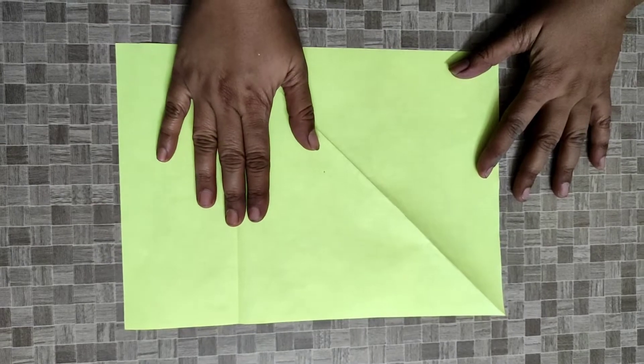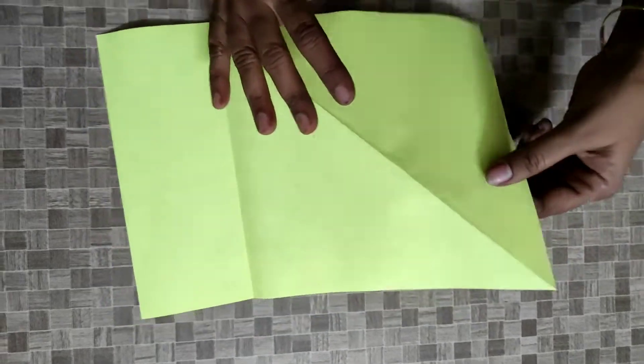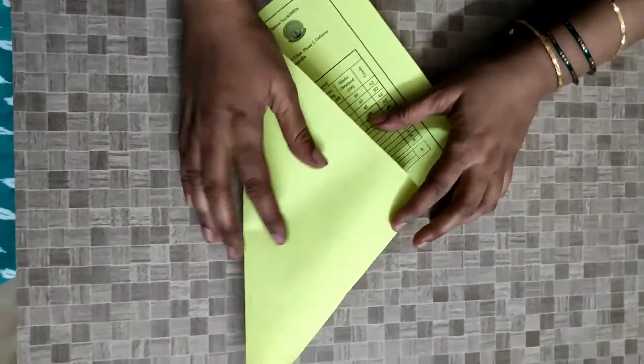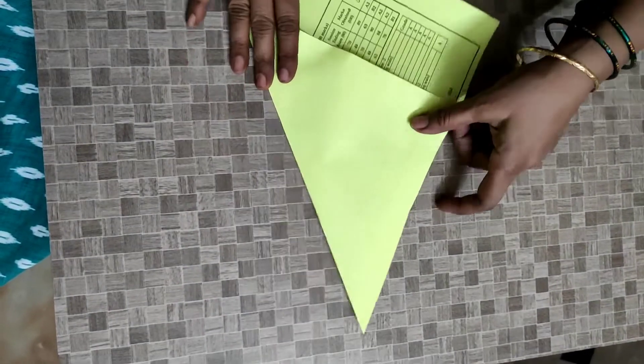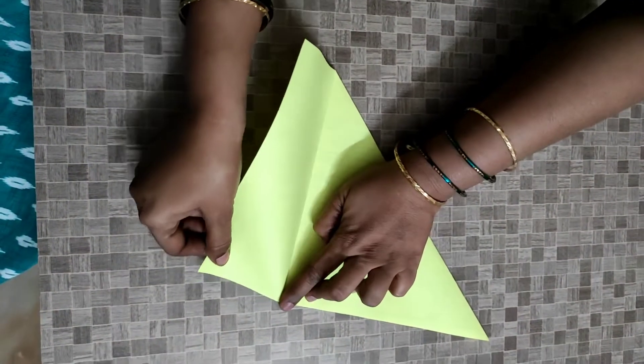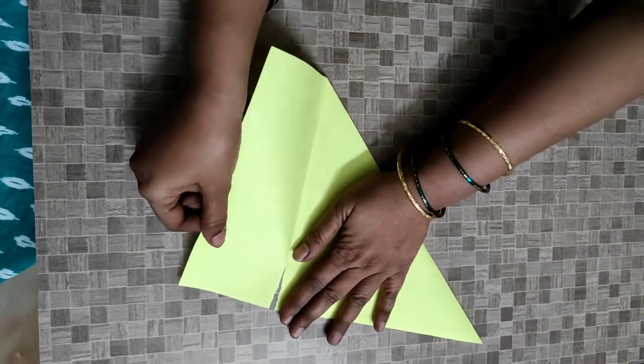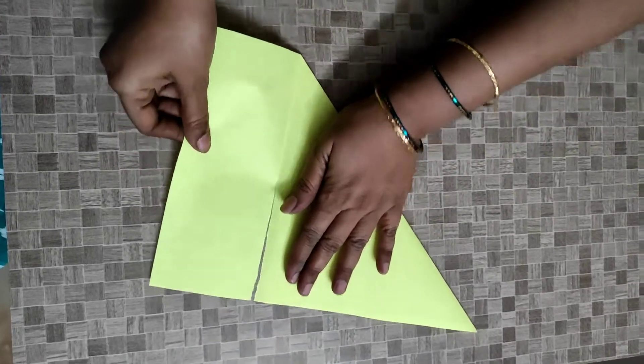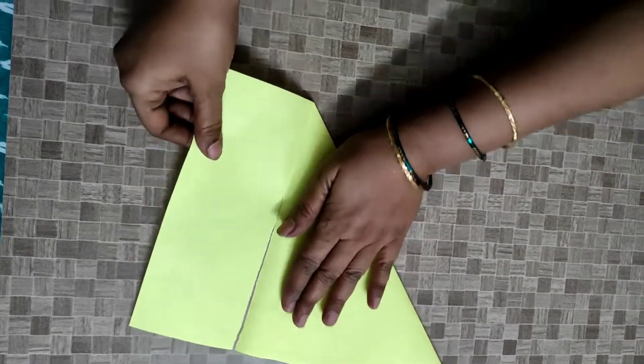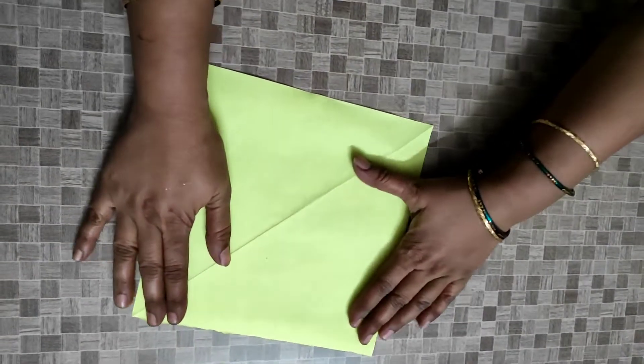So this is a rectangular sheet, a rectangular paper. To make it square, fold it like this and cut the extra part. Cut it neatly. Now here we have the square paper.